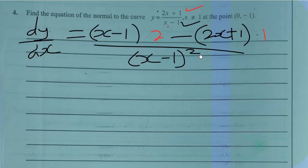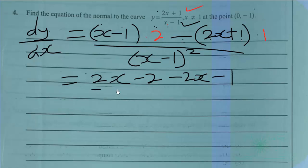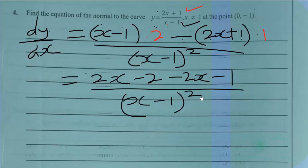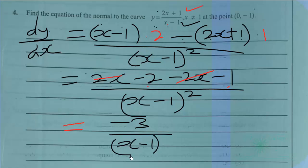Expanding: 2 times x = 2x, and 2 times -1 = -2. Then minus (2x+1), all over (x-1)². Simplifying: 2x and -2x cancel, leaving -2 - 1 = -3. So dy/dx = -3/(x-1)², which can also be written as -3/(x²-2x+1).